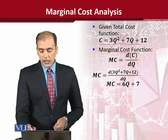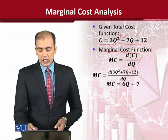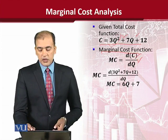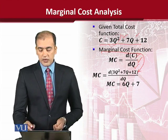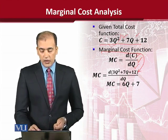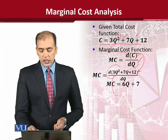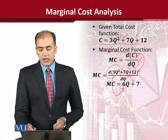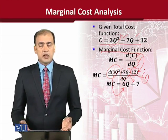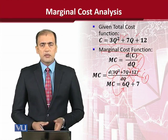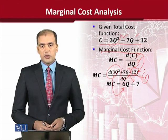Yahan par aap dekh rahe hain — by writing the exact formula of marginal cost function, that is, take the derivative of the cost function with respect to the output. By putting the value — jo value thi cost function ki — hamne substitute ki aur isko hamne simplify kiya. Is term ka jawab ye aa raha hai aur is term ka jawab ye hai. Whereas this value 12 is not retained, because 12 ka derivative — jo ke constant hai — it will be 0. So we have obtained the marginal cost function.